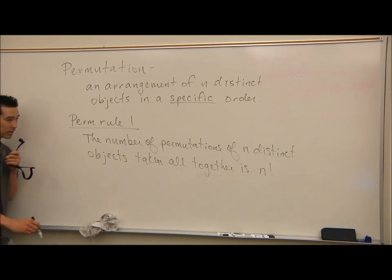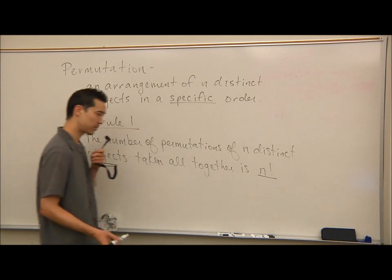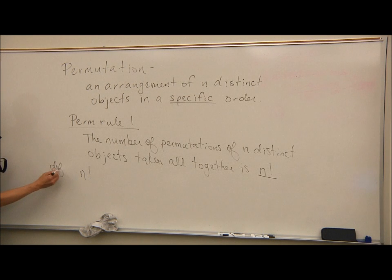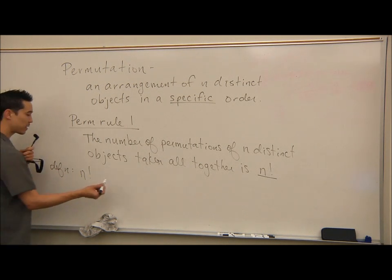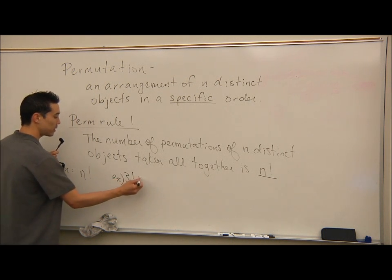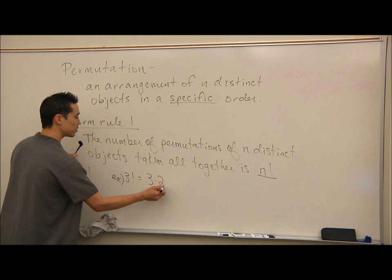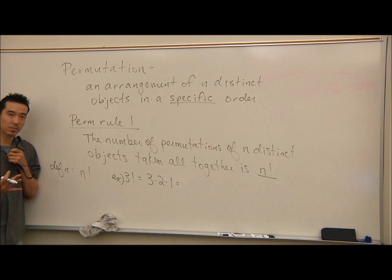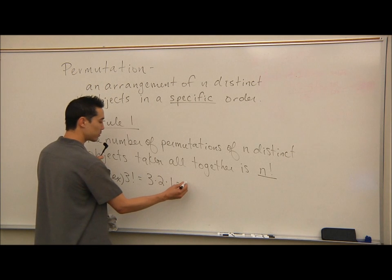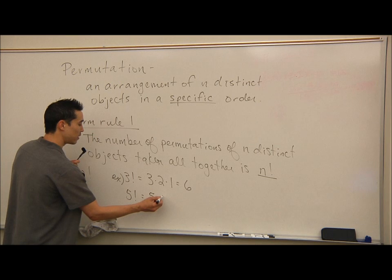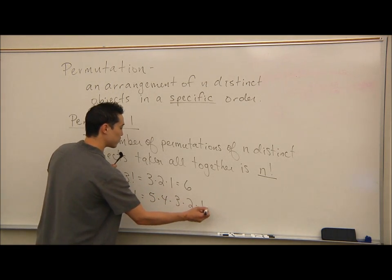Before we go further, let me define n factorial. If you have something like 3 factorial, what this means is 3 times 2 times 1. Whatever the number is, you take that number times the next smaller whole number, and so on. So 3 factorial is 3 times 2 times 1, which is 6.